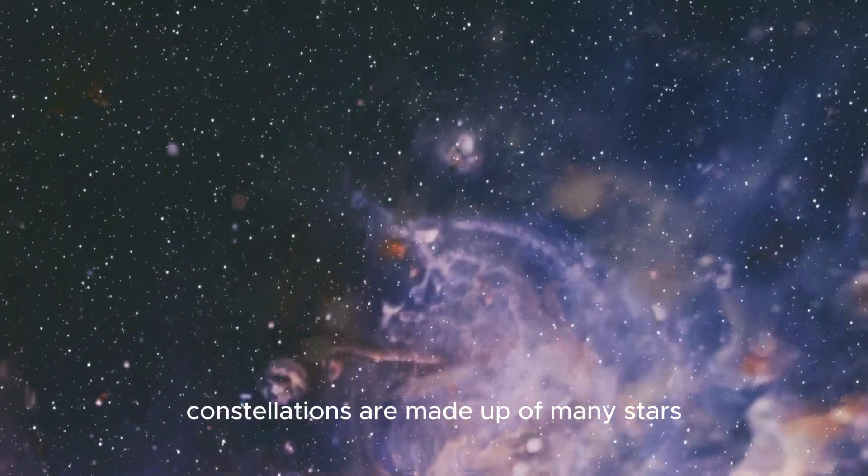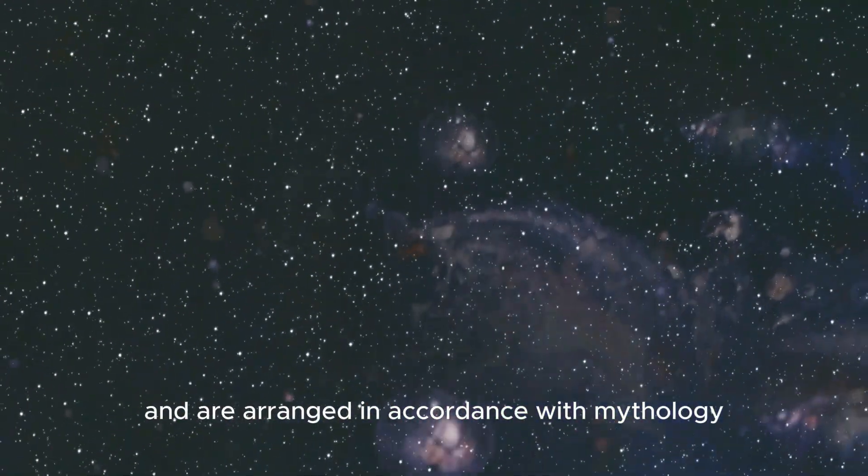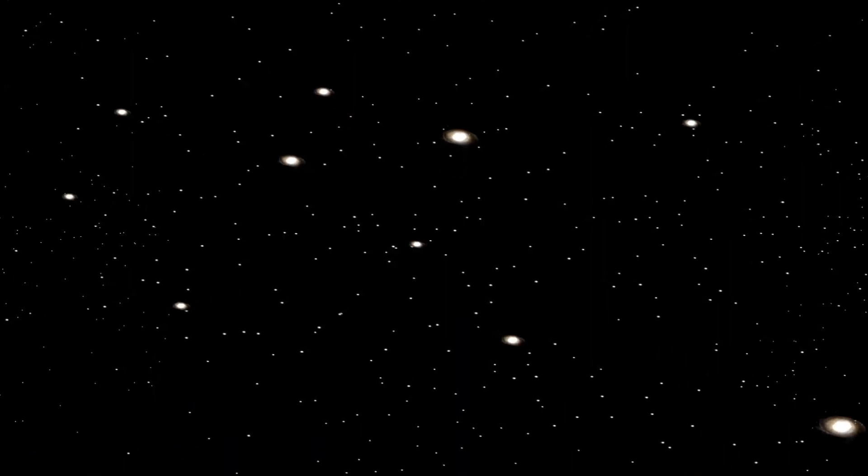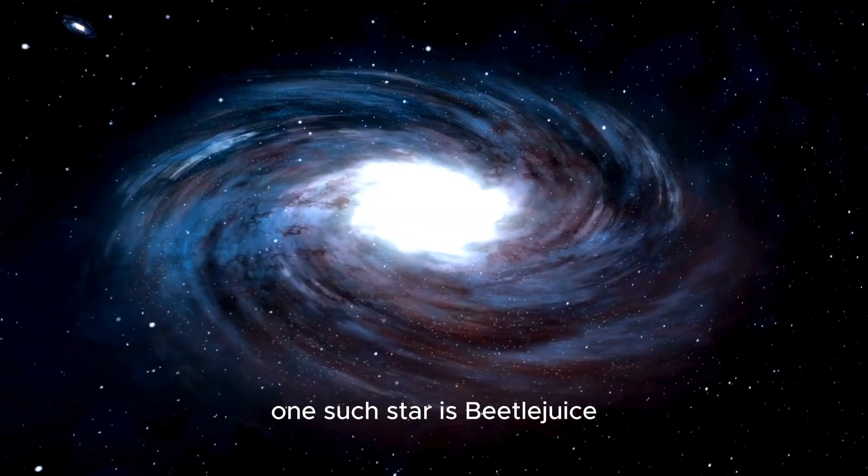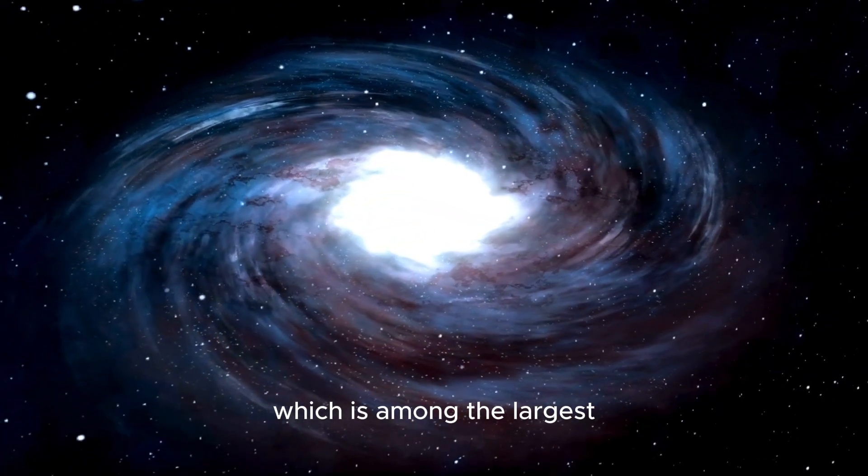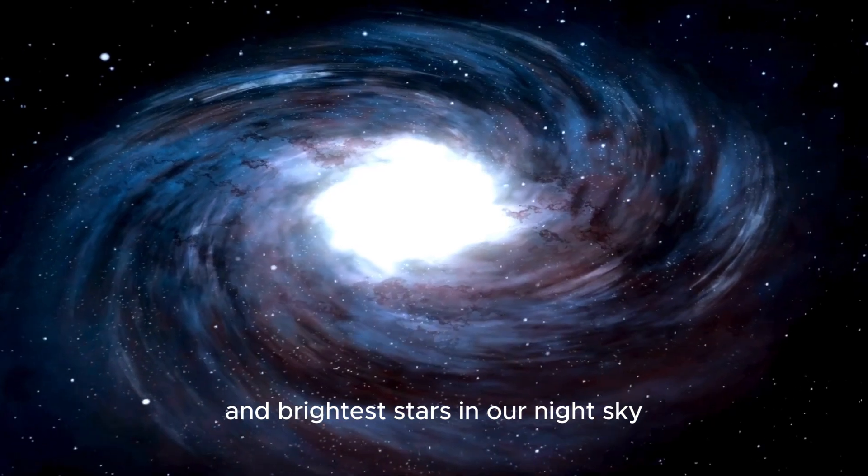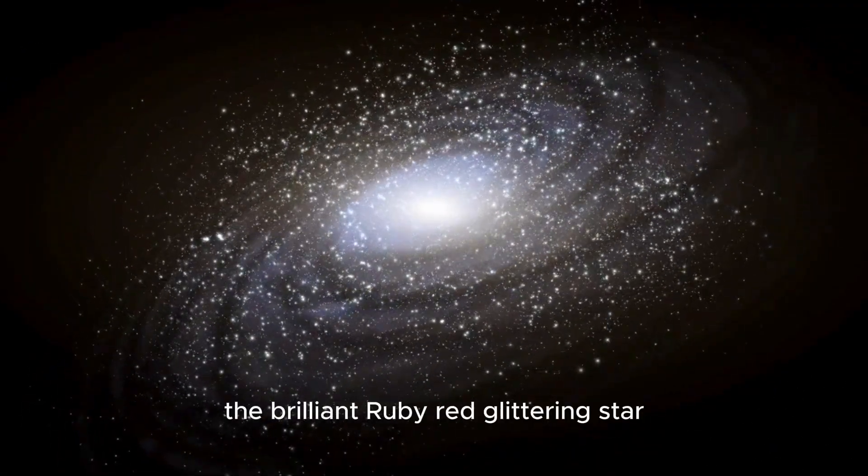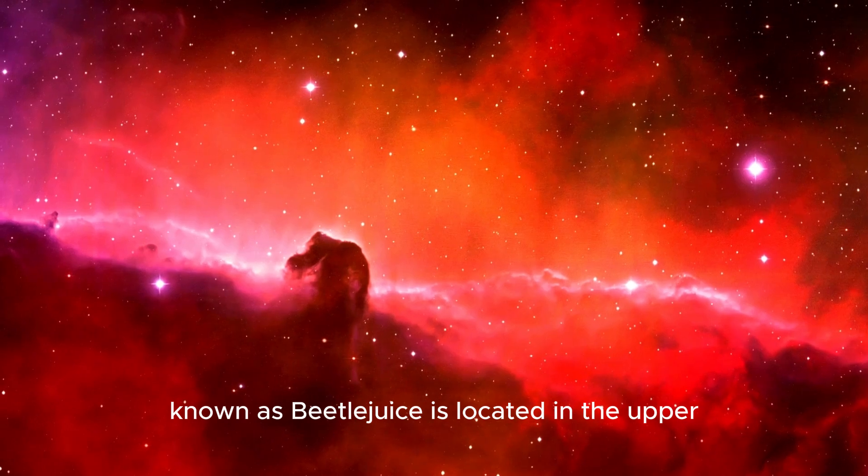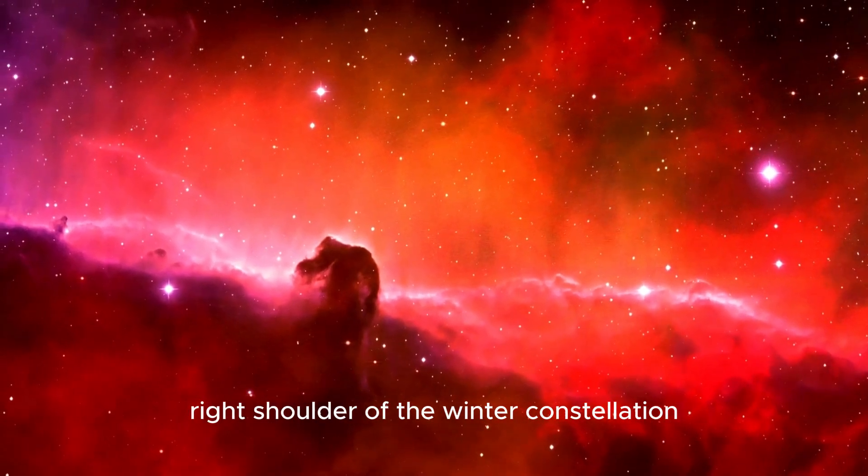Constellations are made up of many stars and are arranged in accordance with mythology and legends. They are still used for navigation today. One such star is Betelgeuse, which is among the largest and brightest stars in our night sky. The brilliant, ruby-red, glittering star known as Betelgeuse is located in the upper right shoulder of the winter constellation Orion the Hunter.